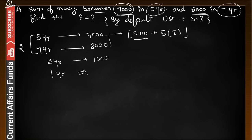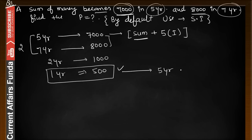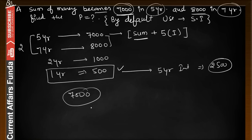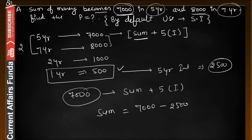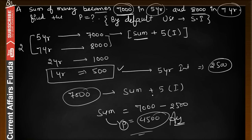The 7000 amount consists of sum plus 5-year interest. The 5-year interest is 5 × 500 = 2500 rupees. So if we deduct the interest from 7000, we get the principal: 7000 minus 2500 equals 4500 rupees. That is your principal amount — sum equals 4500.